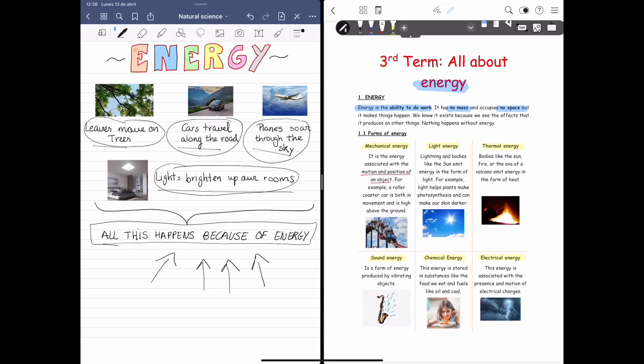Light energy. Bodies like the sun emit energy in the form of light. So they produce light energy.